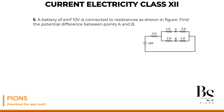Let's first simplify it as usual. The 1 ohm and 3 ohm in the upper branch are in series, giving an equivalent of 3 plus 1 which is 4 ohm. And the lower branch also has 3 plus 1, giving 4 ohm.